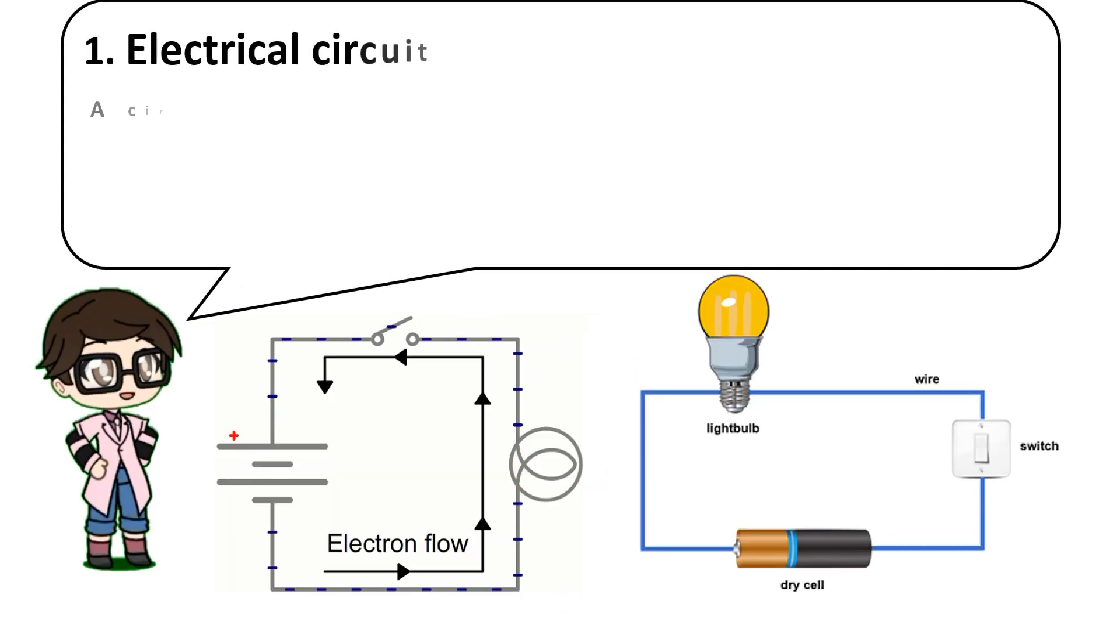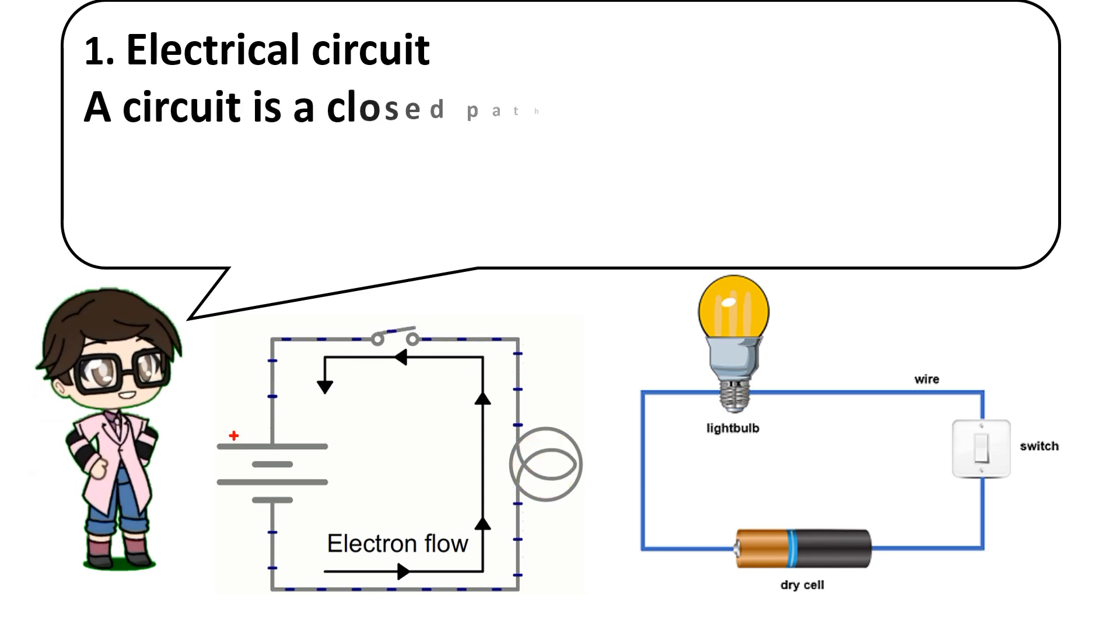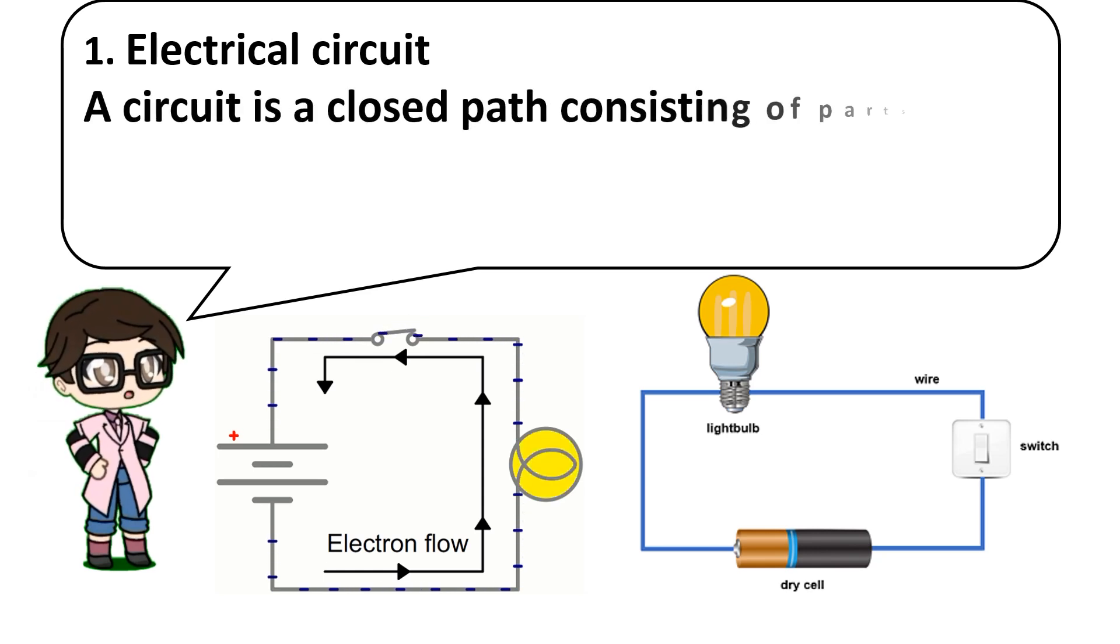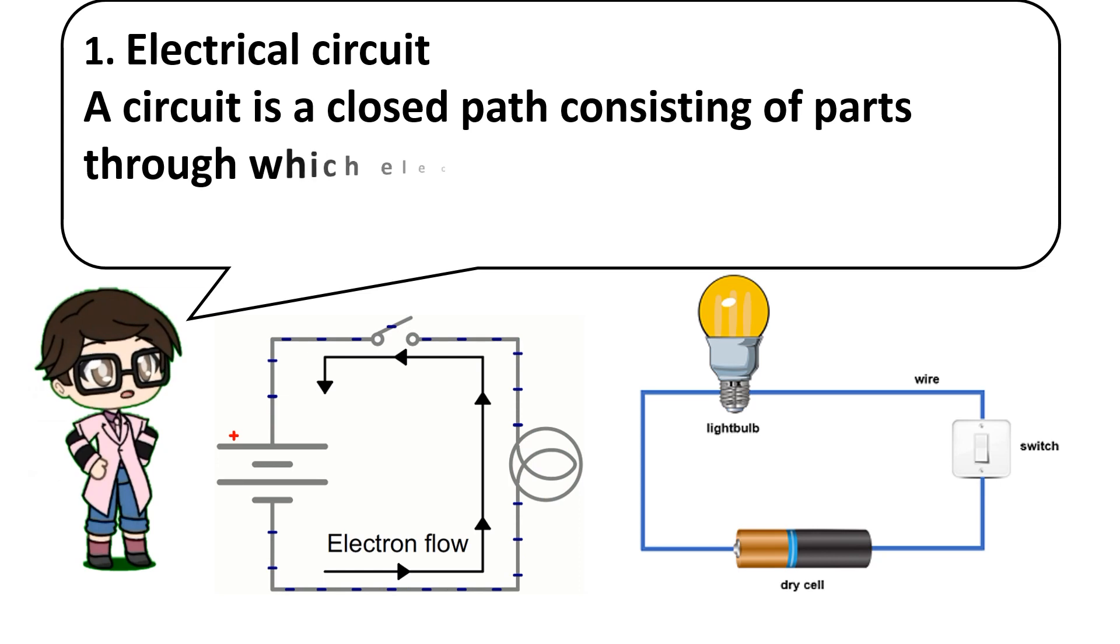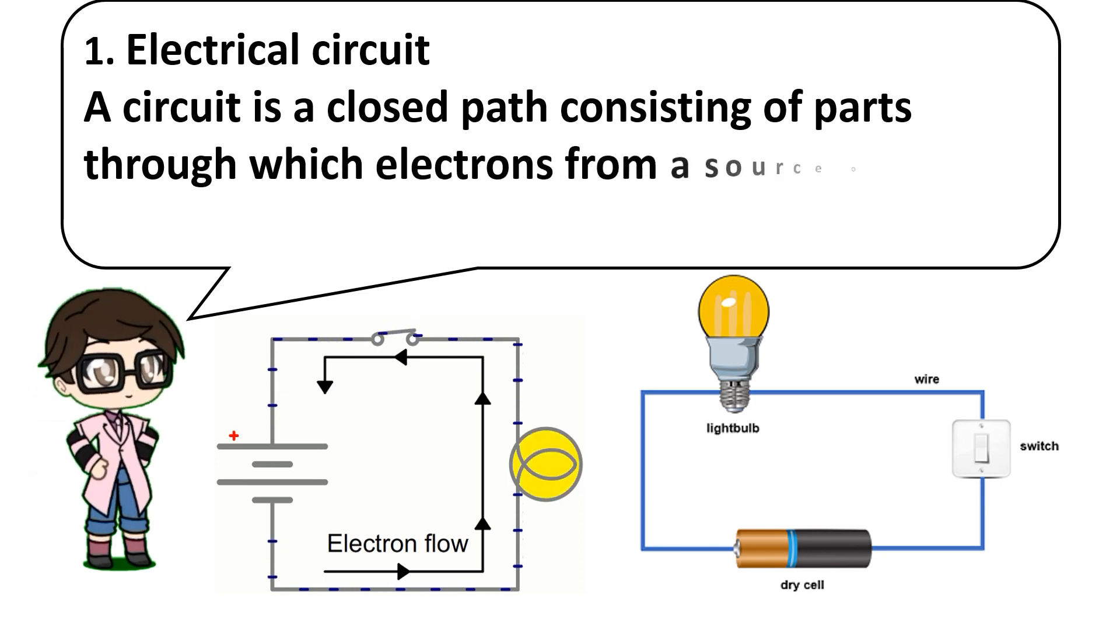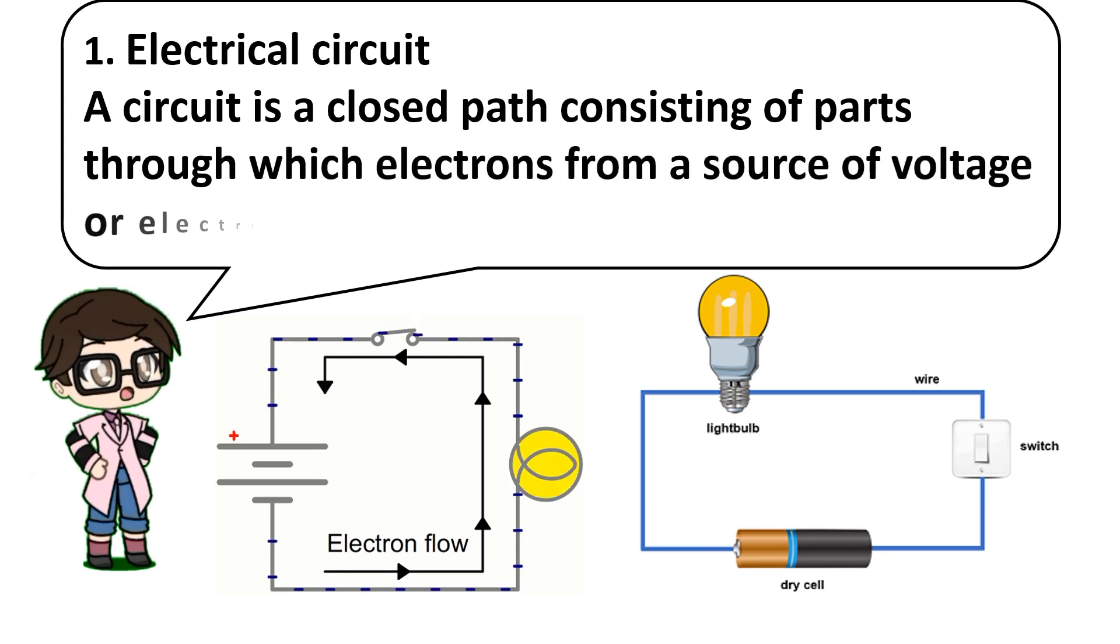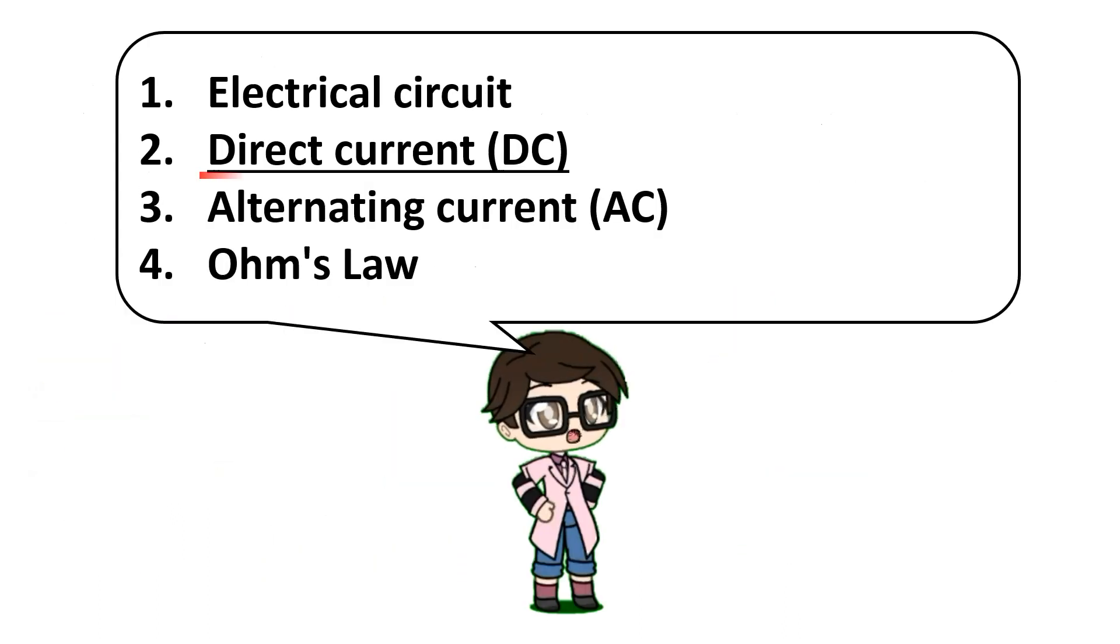Electrical circuit: a circuit is a closed path consisting of parts through which electrons from a source of voltage or electricity can flow. Next is direct current.